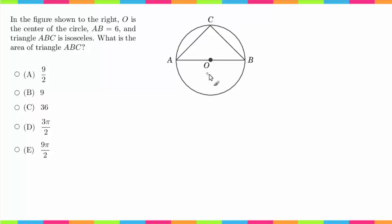So the first piece of information they gave us is that AB is 6, which actually tells us that the diameter is equal to 6. Because this is the center, that also tells us that this length is 3, or the radius is 3.